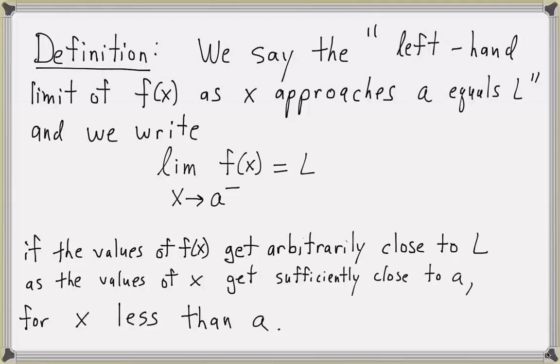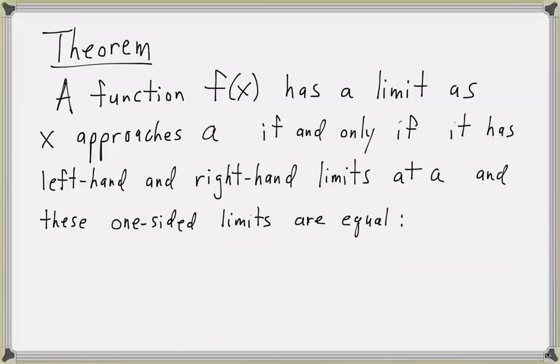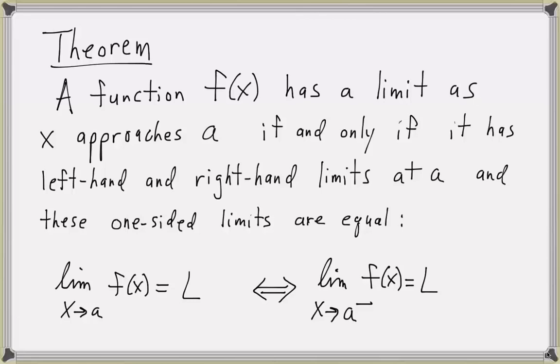Now that we've defined both right-hand and left-hand limits, it's important to note that they follow the same limit laws from previous lessons. The two-sided limit is related to the one-sided limits as follows: a function f of x has a limit as x approaches a if and only if it has both left-hand and right-hand limits at a, and further, these one-sided limits must be equal. In notation: the limit of f of x as x approaches a equals l if and only if the left-hand limit equals l and the right-hand limit as x approaches a also equals l.